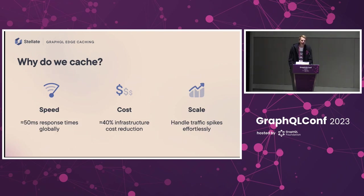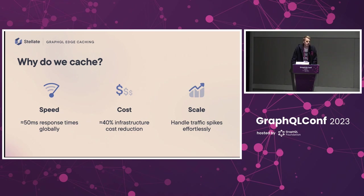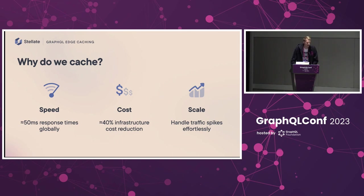So why do people cache? The most fundamental reason is cost reduction. As an example, one of our big customers, Puma, saw a 40% overall infrastructure cost reduction by caching their responses. It's very expensive to go to the database, to the Elasticsearch cluster and whatnot to compute these GraphQL responses. It's a lot cheaper if you can just store the same response over and over again and give it to the customer without having to do any compute. So that's what caching allows you to do.